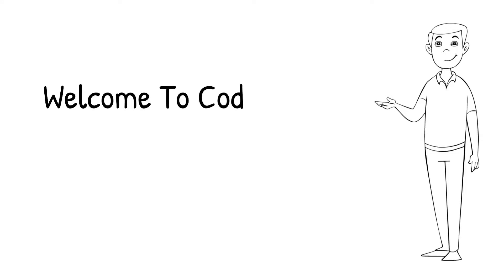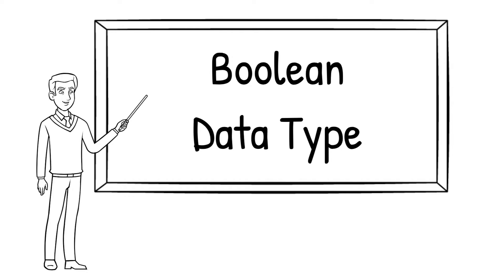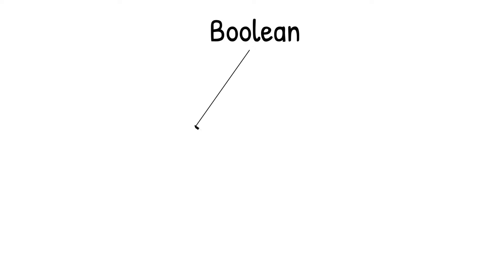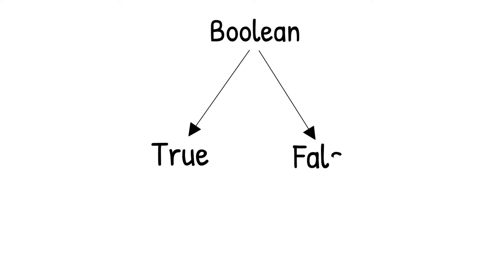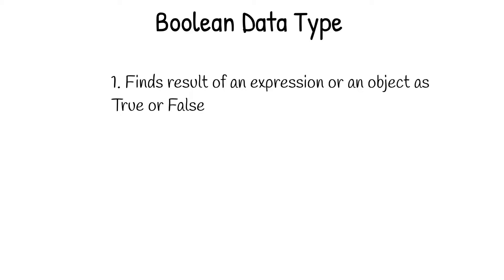Hello people, welcome to Codeframer. In this video, we are going to understand about the boolean data type in Python. Booleans simply hold two values: one is true and the other is false. It is as simple as that. It helps us to know the result of an expression or an object as true or false.